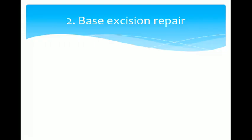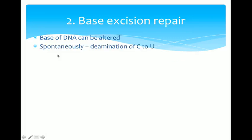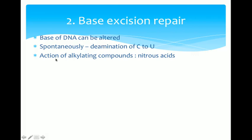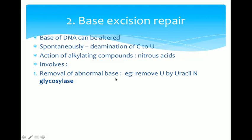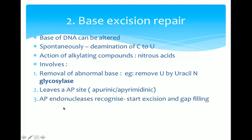The next type of repair is base excision repair (BER). The base of a DNA can be altered — spontaneous deamination of C to U is the most common way by which a DNA base is altered, but other causes include alkylating compounds and nitrous acids. BER involves removal of the abnormal base, such as uracil, by a uracil-DNA glycosylase, which leaves an apurinic or apyrimidinic (AP) site.